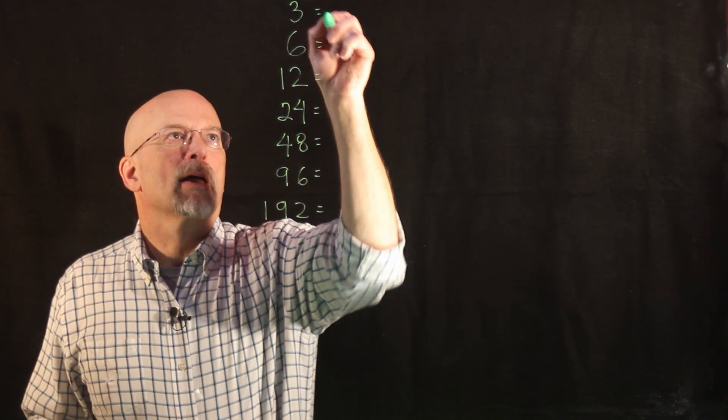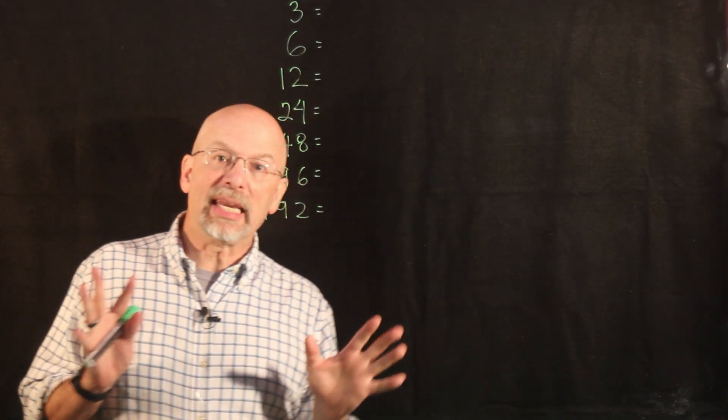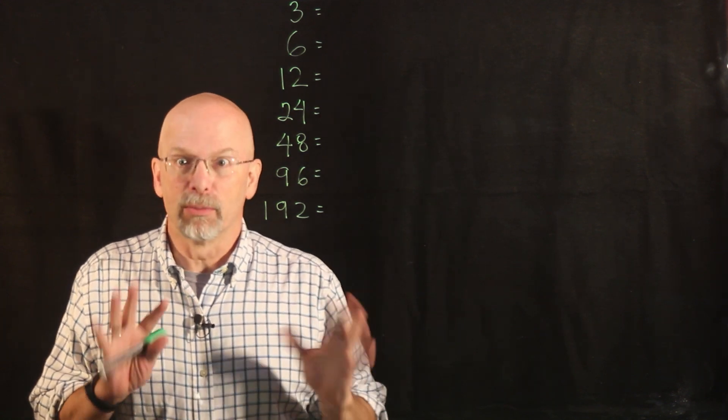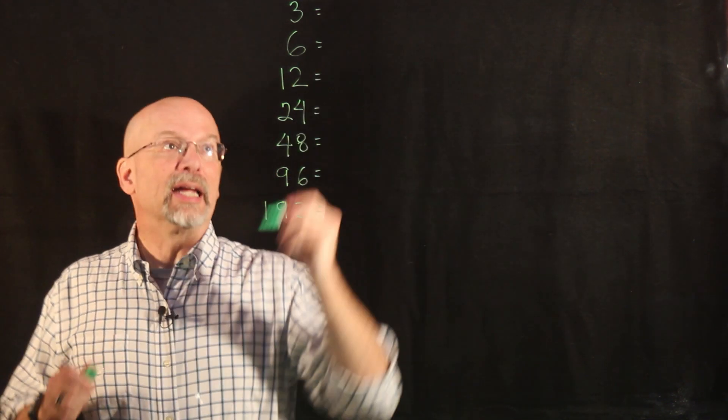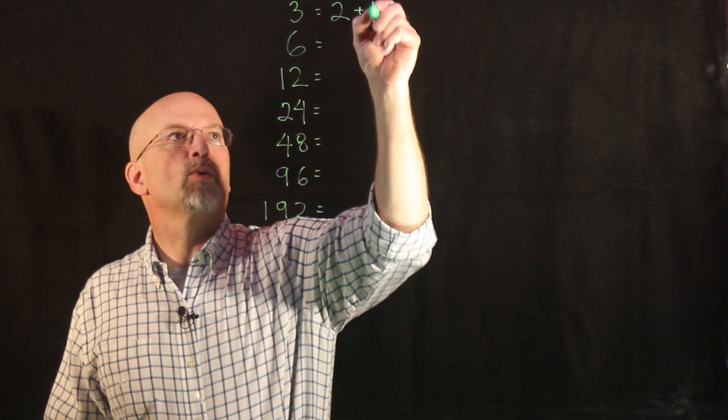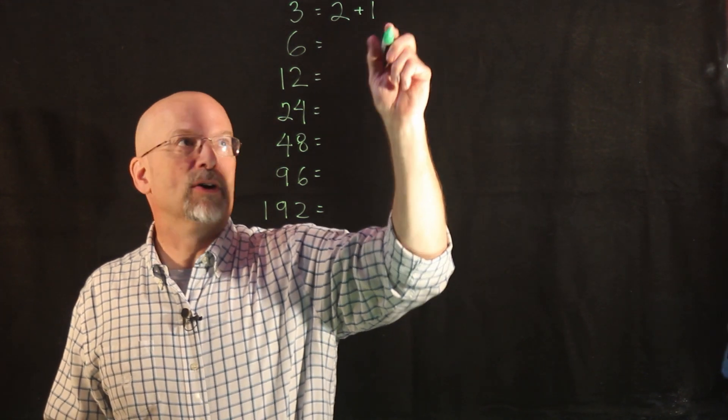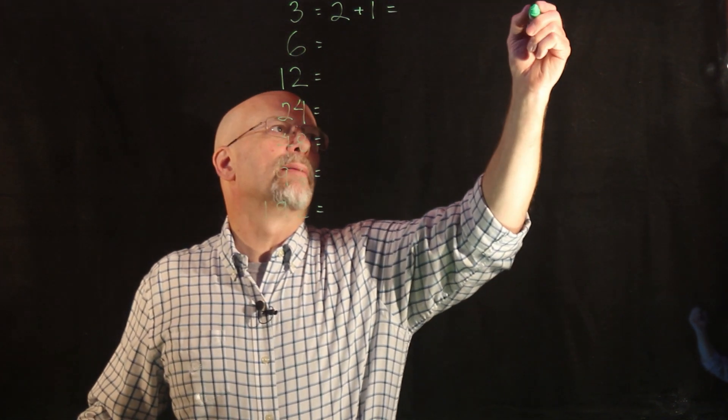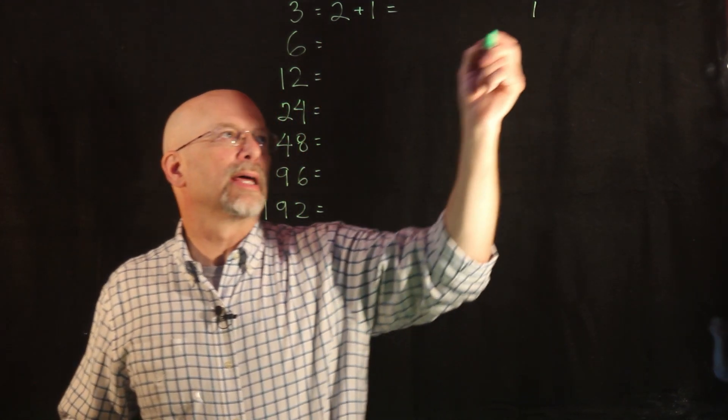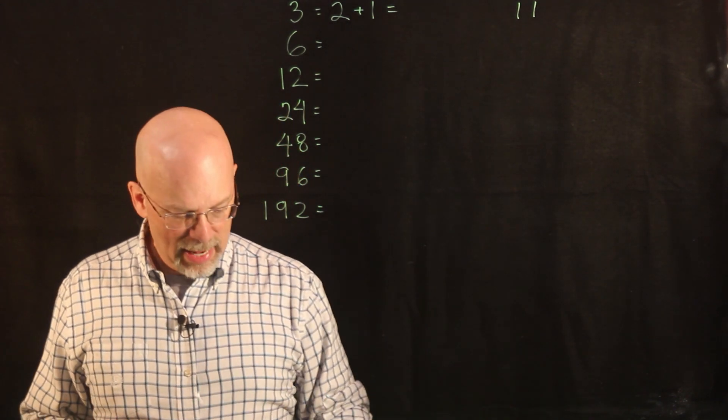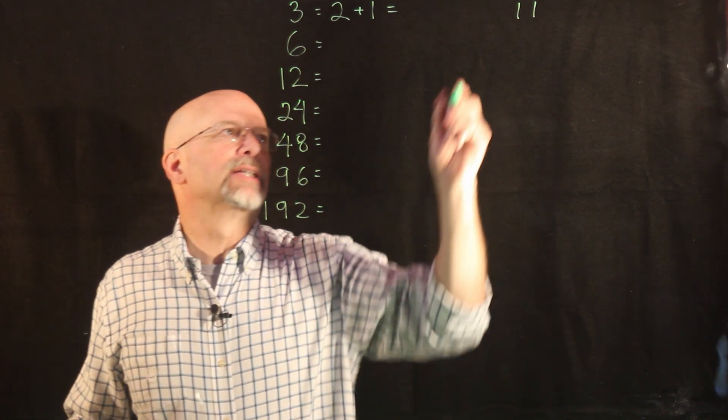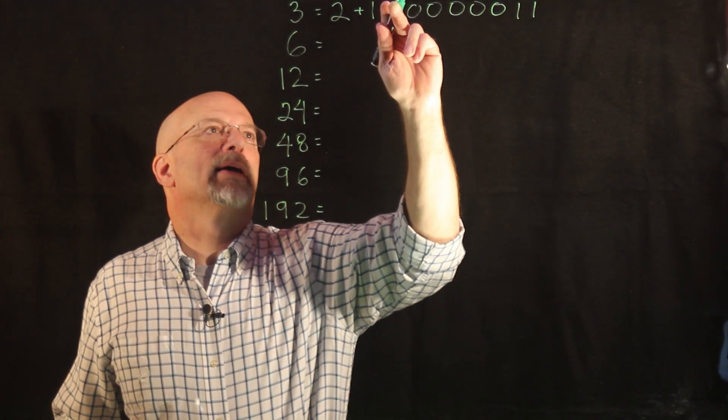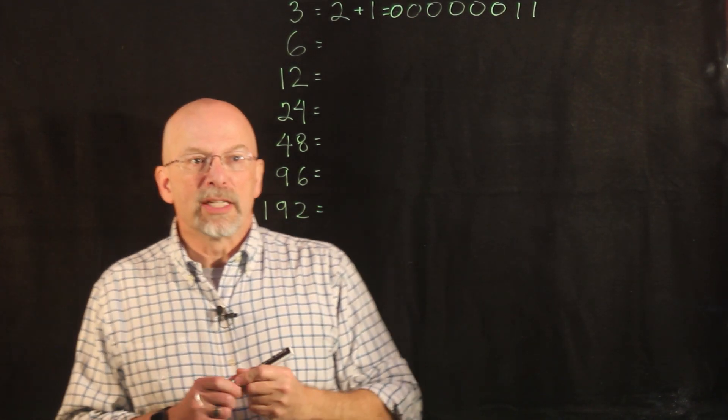Now, what we had talked about before was taking our decimal value and breaking it into the power of two components. So in order to represent three, well, three has two powers of two. It is two plus one, two being two to the one, one being two to the zero, which means that in binary, we have a one in the two to the zero place, the least significant bit, and then we have a one in the two to the one place. Let's make our binary values one byte wide, eight bits, so all the rest of the bits should be zeros.